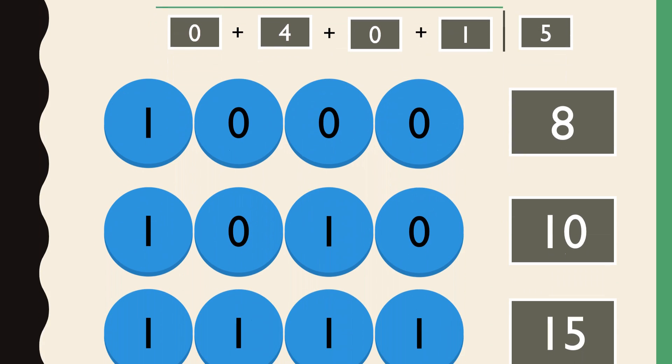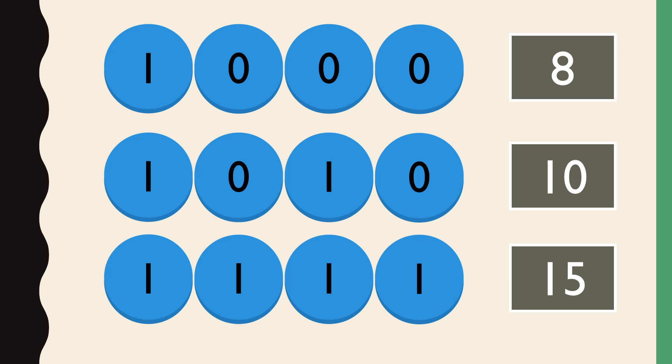Here are some more examples of 4-bit binary numbers. See if you can work out the reasoning for the values. 1000 is 8, 1010 is 10, and 1111 is 15.